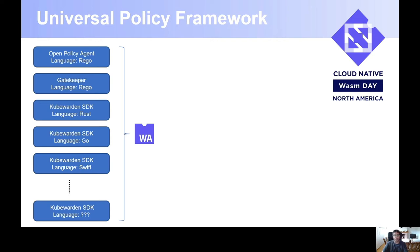So, what if we create a policy framework based on a universal binary — a universal policy framework? This is what we are aiming for with Kubewarden. If you look at the options, from top to bottom, we have Open Policy Agent, which is a policy engine where you write policies in the Rego language. You can also use Gatekeeper, which also requires Rego. And you could use the Kubewarden SDK for writing policies in different languages that we support — like Rust, Go, Swift, and Weel. More languages will come over time. But the important bit is that we are able to build all these programs or policies to the very same thing: a WebAssembly binary.